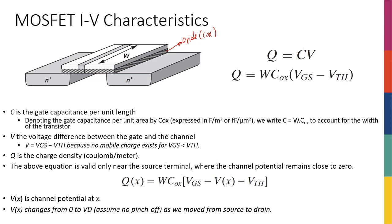If I multiply COX by W, the width of my channel or transistor, I get the farads per unit length — the capacitor per unit length. So the C here I'm going to define as W times COX. Why didn't I multiply by the length? Because the charges are not really distributed equally along the length direction of my transistor, but they are distributed equally along the width.